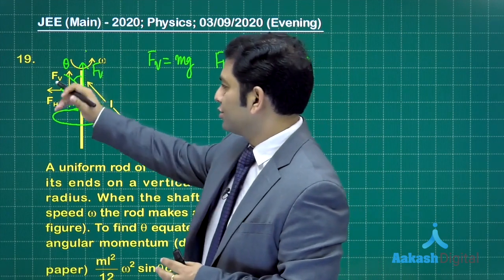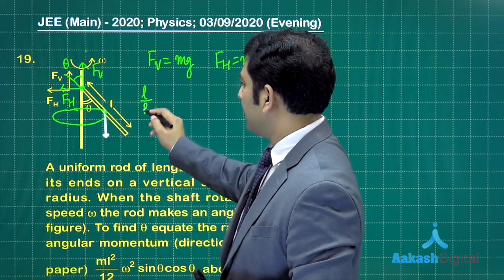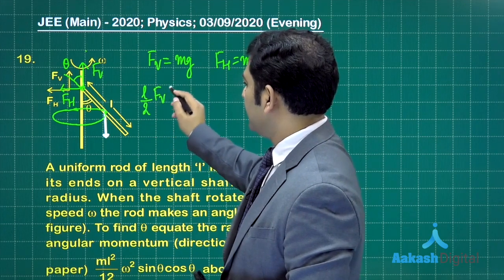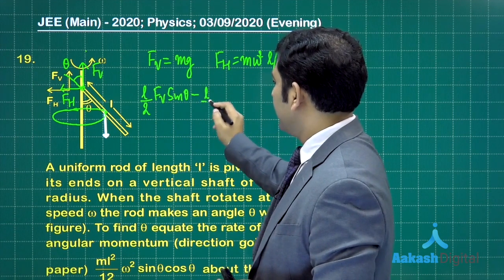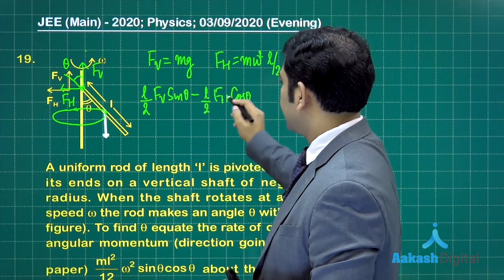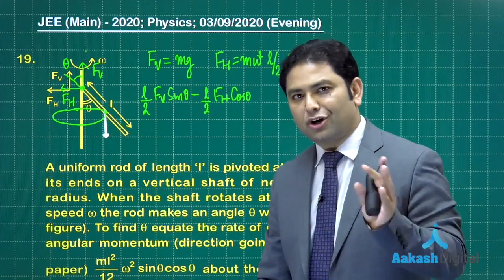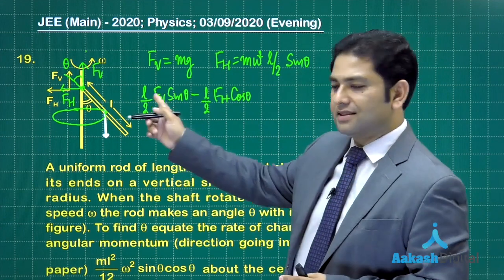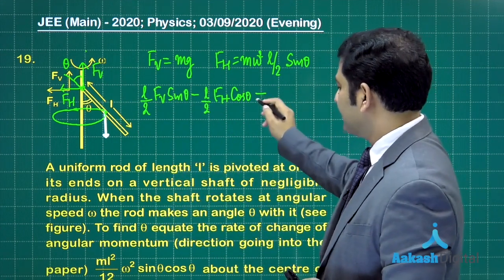The torque due to FV will be cross, the torque due to FH will be dot. This is L by 2 FV sin theta minus L by 2 FH cos theta, because the angle would be 90 minus theta.